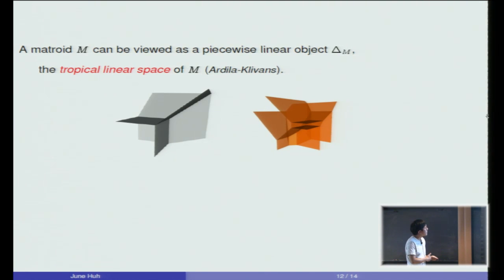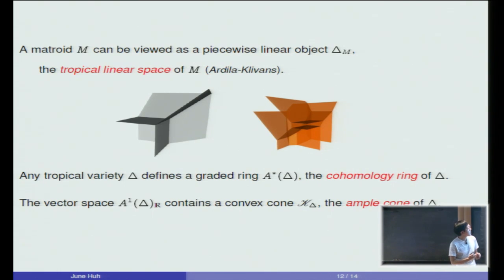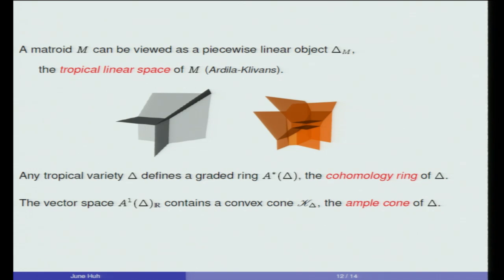First of all, I'll use the fact that the matroid M can be viewed as a certain piecewise linear object. These are the so-called tropical linear spaces, a special class of tropical varieties, the subject of tropical geometry. These are some examples or pictures of tropical varieties. These are certain polyhedral complexes that satisfy certain properties. What we do with this tropical variety is that we associate a certain graded ring that I'll write by A^* of delta, and I'm going to call that ring a cohomology ring. Here I can do it with Z. Here I will do it with R.